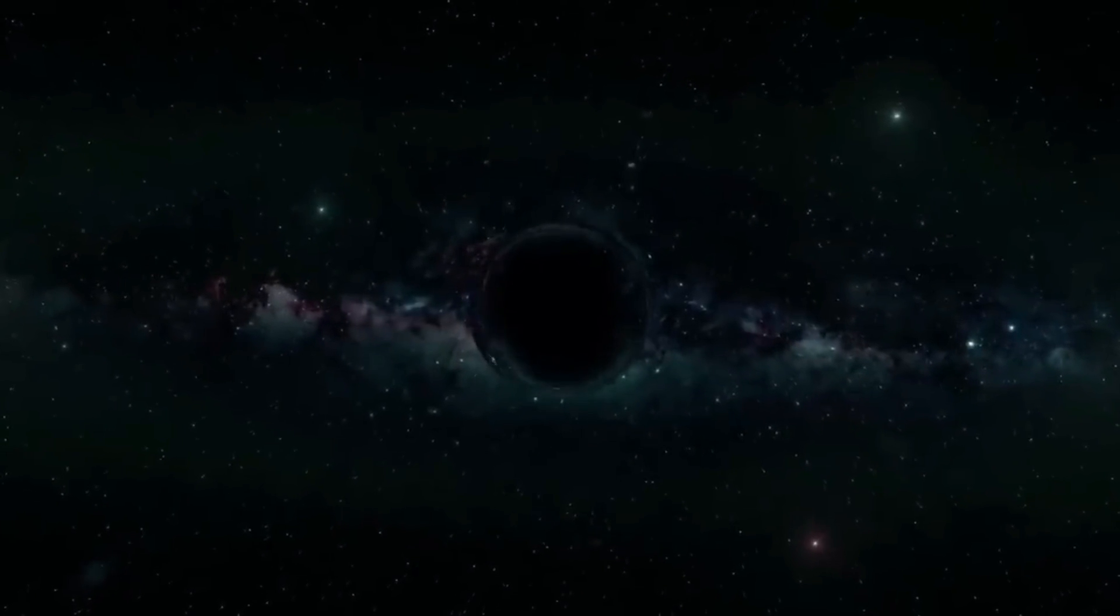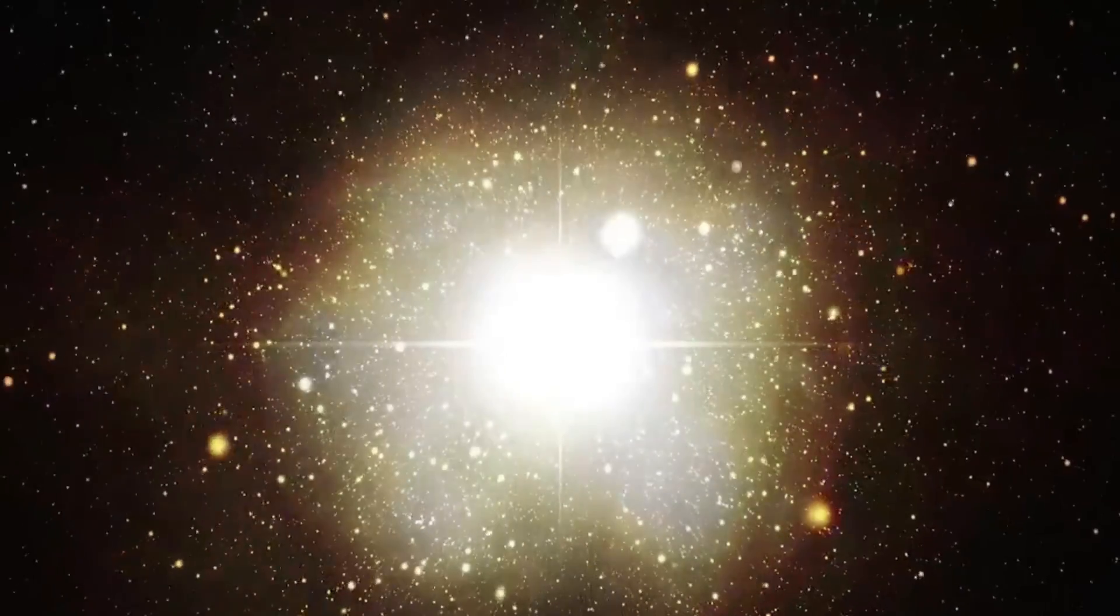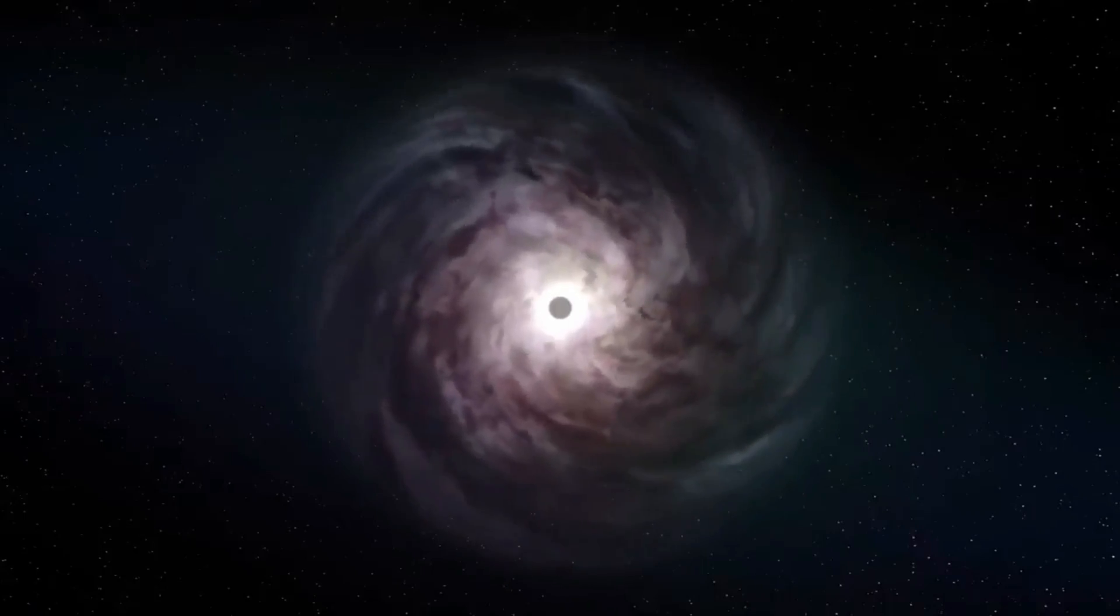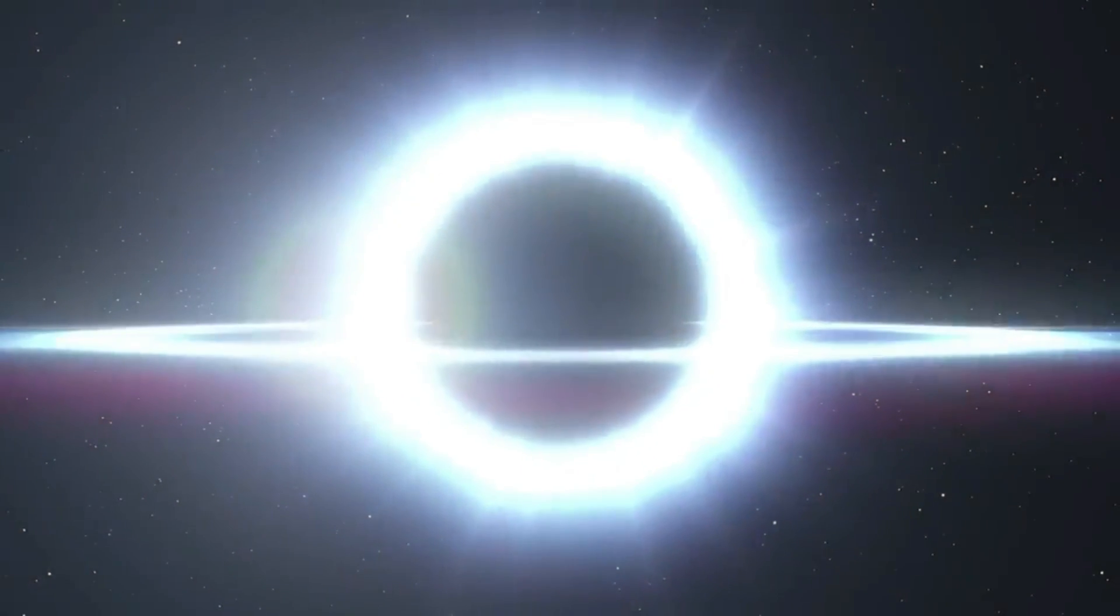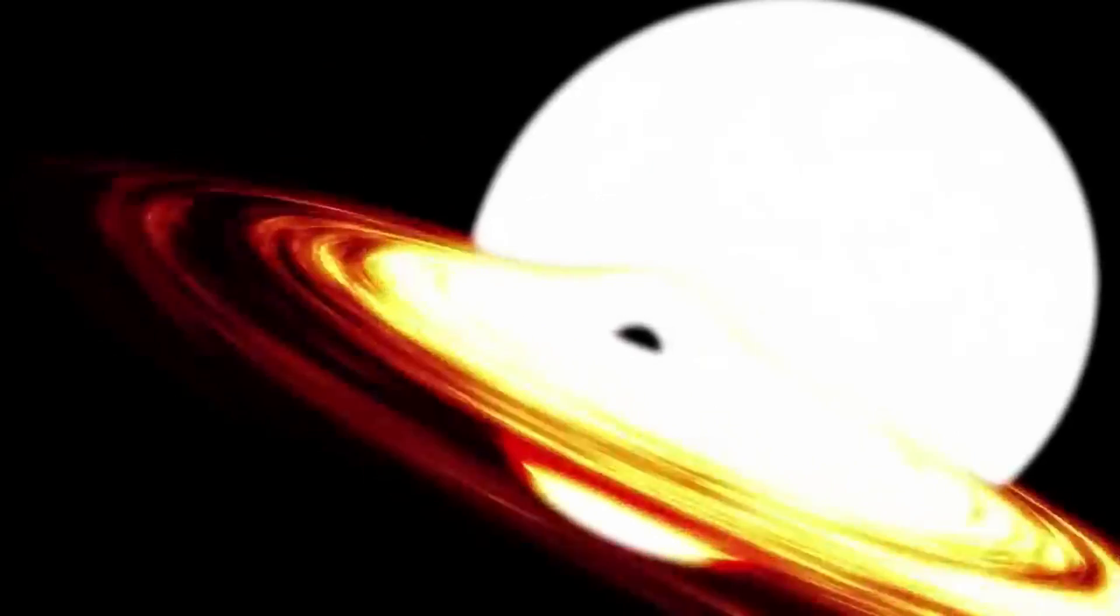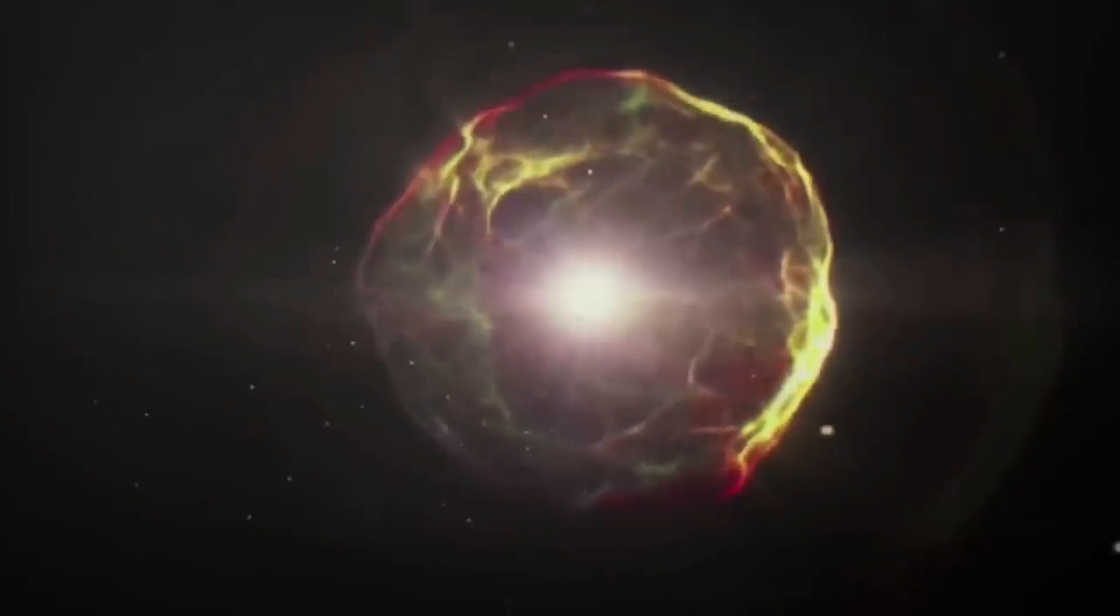Since then, we've learned that there could be up to a hundred million black holes in the Milky Way alone, though finding them all is difficult. So exactly what are black holes? In a nutshell, they are some of the most extreme objects in the universe, with gravitational forces so strong that not even light can escape. They are invisible because they don't emit any light or radiation, and they can only be detected by the effects that they have on nearby objects.